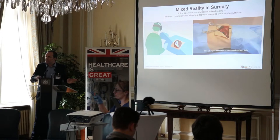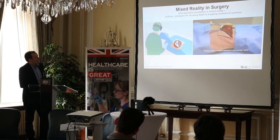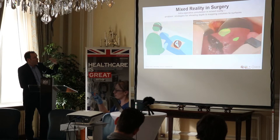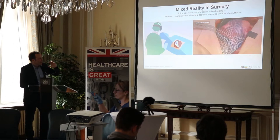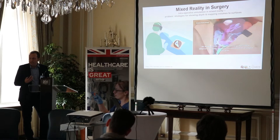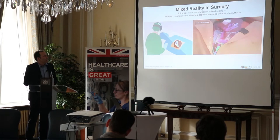Besides a lot of technical challenges with this approach, we need to address the interface — how are we going to generate these images? We created a replica model based on real patient data, and tested certain strategies for showing depth and mapping volumes to surfaces. You can see it makes a huge difference how you do this — you have to play with contrast, colors, and transparency of certain structures. And all of a sudden you can see something like this: a glass organ, where you can actually see the anatomy within the surgical site.